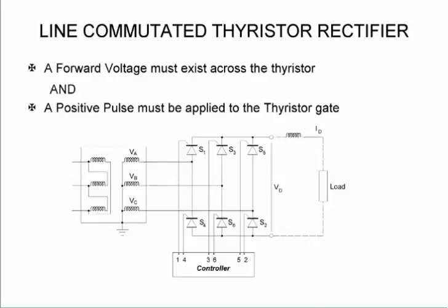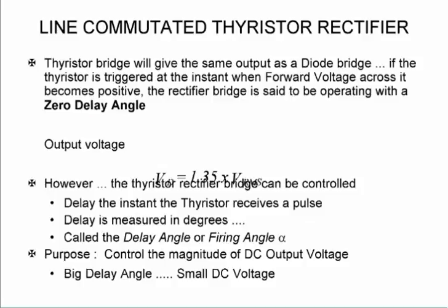Now we need a forward voltage across the thyristor, and if we apply a positive pulse it will switch it on. So by using thyristors we can now control the output voltage and it's not a fixed voltage as in the previous case.